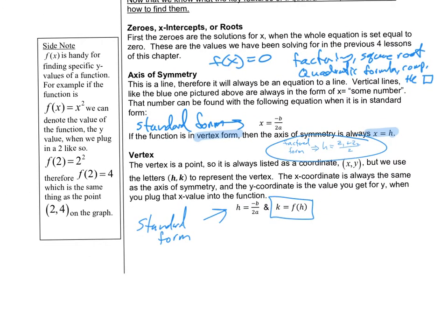f(x) notation is handy for finding specific y-values. For example, if f(x) = x², then f(2) = 2² = 4, meaning the point (2, 4) is on the graph. So whenever we say k = f(h), we're just plugging in the h value to get the y-value, which gives us the k-coordinate of the vertex.